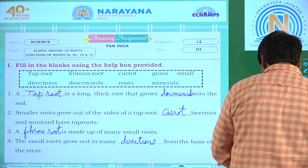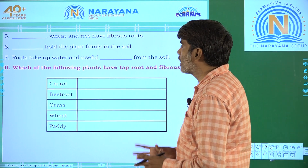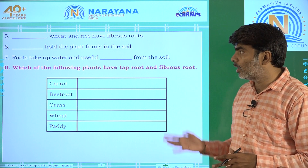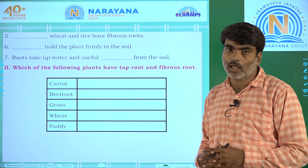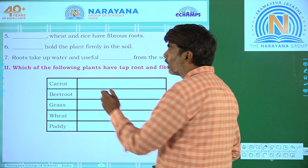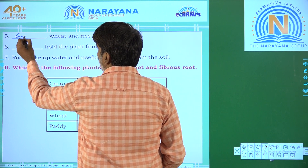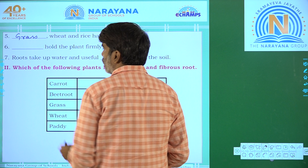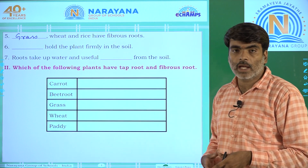Moving on to the next one. Wheat and rice are fibrous roots. Apart from those two, one more plant — can you guess? It is grass. If you see the grass, its roots grow sidewards. These are examples of fibrous roots.